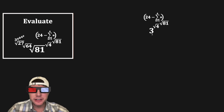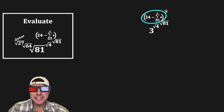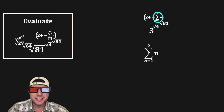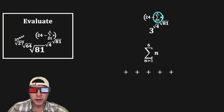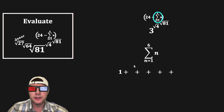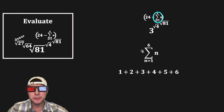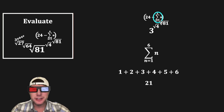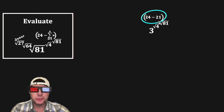Now let's combine everything together — we have another power tower on this side. We need to evaluate the top part first. To do that, we need to find the index of the root, which means we need to figure out the sum from n equals 1 to 6 of n. It's a sum, so we add terms together: plugging in 1, 2, 3, 4, 5, and 6 for n gives us 1 plus 2 plus 3 plus 4 plus 5 plus 6, which equals 21. So this sum is 21. Then 24 minus 21 is 3, giving us the cube root of 81.